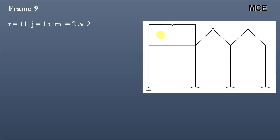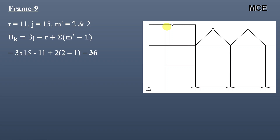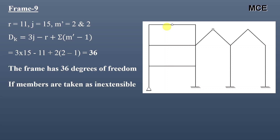For frame 9, this frame has 11 reactions, 15 joints, and 2 internal hinges. The number of members meeting at both internal hinges is 2, so m′ = 2 and 2. The value of DK is 36, meaning this frame has 36 degrees of freedom. If members are taken as inextensible, this frame contains 16 inextensible members, so DK = 36 − 16 = 20.